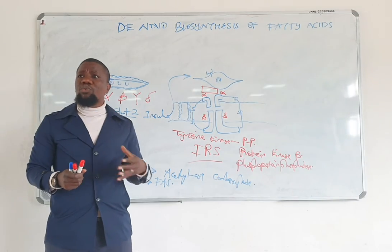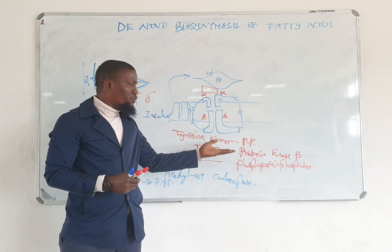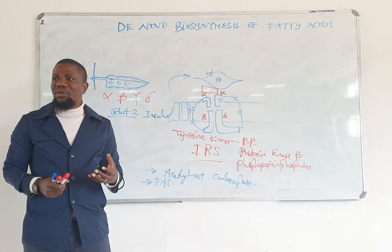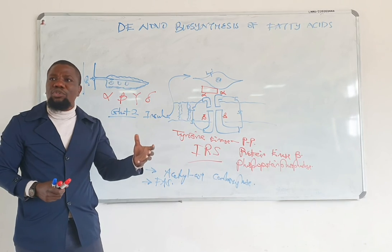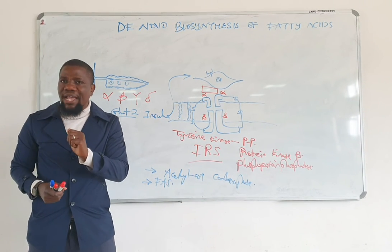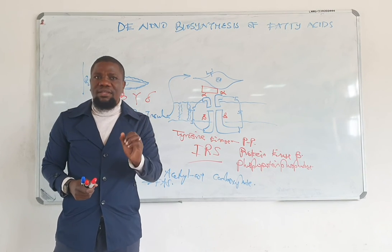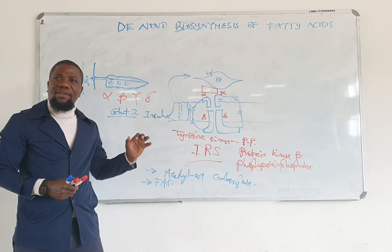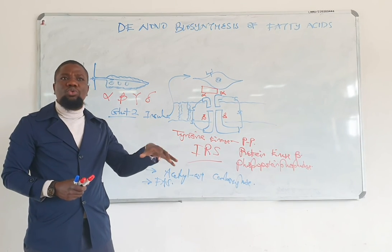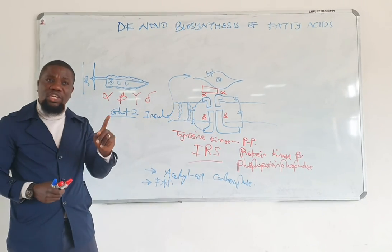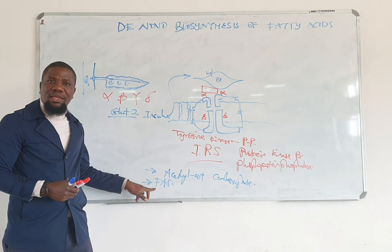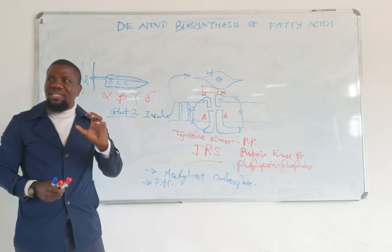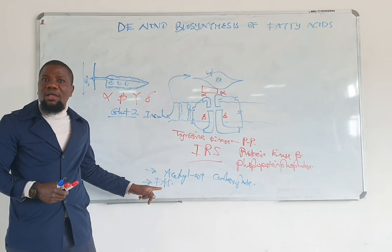The effect of insulin goes beyond just dephosphorylation of enzymes. It also leads to increased transcription, so these two enzymes start being produced in much greater amounts. This explains why when you consume carbohydrates such as starch, it leads to increased storage of fat: more glucose means more insulin secretion, which means increased production of the enzymes needed for fat synthesis. When you have more of those enzymes, you store more fat.